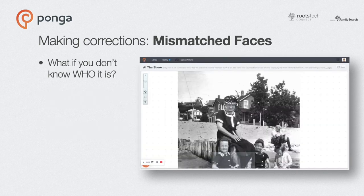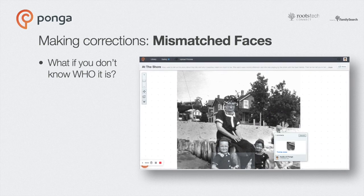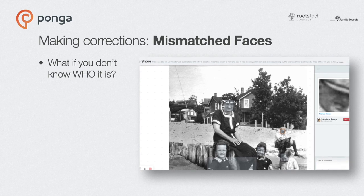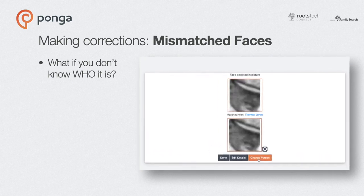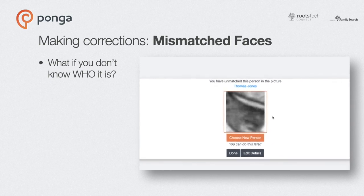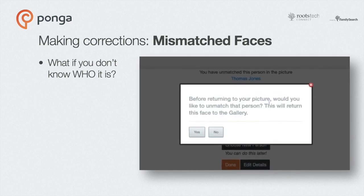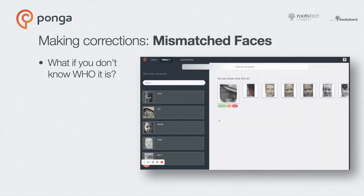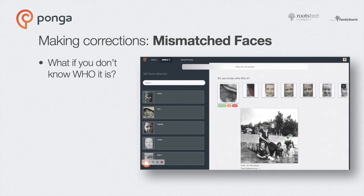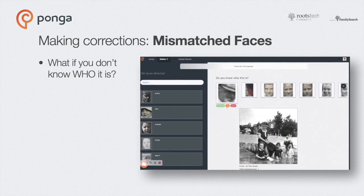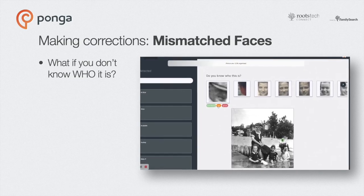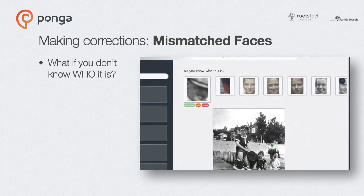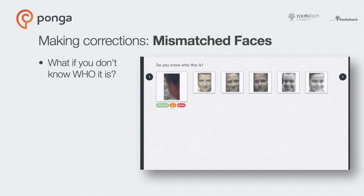Here's a special case of the mismatched face: what if you realize it isn't the person labeled, but you don't know who it is? In this case I know it's not Thomas Jones, but I also don't know who it is. Tap the face, go to the Face Details page, tap Change Person, then say Done. That returns the person's face back into the gallery. Back in the gallery after the upload, there's that guy again — now I'm sure I don't know who it is, so I'll skip him to take another look when I review my gallery with my Aunt Mary. If you think someone might know, just skip and come back. If you ignore someone, they're gone and you lose the ability to detect them in another picture, so save that for strangers at the other table.